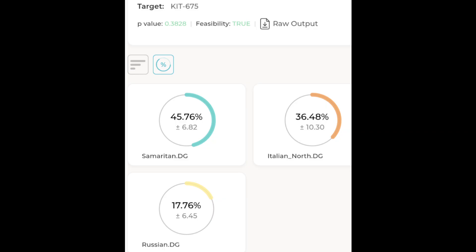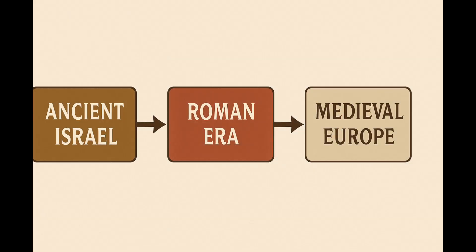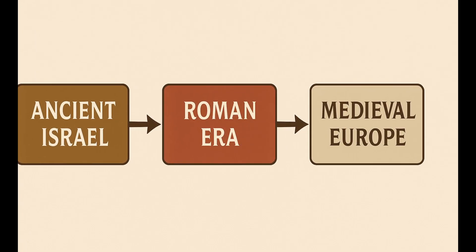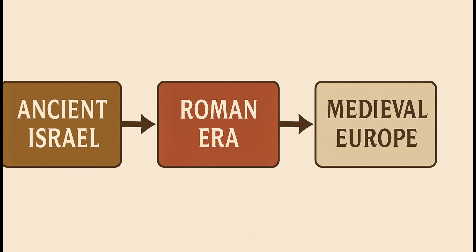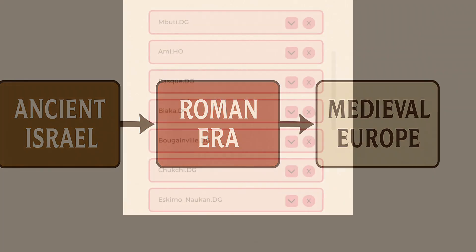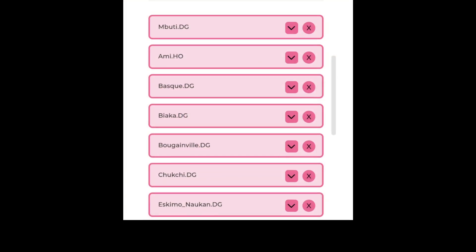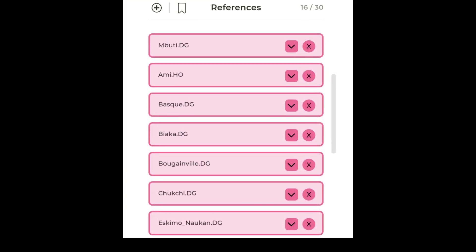Together they tell a coherent story: origins in the Levant, admixture in the Roman world, and minor input from Eastern Europe. All models were run using the standard outgroup panel used in scientific publications.